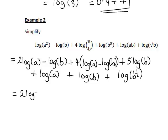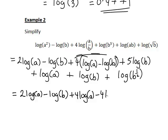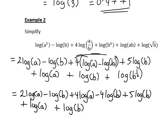So what have we got? 2 log a minus log b, that 4, we can multiply out those brackets now, so that'll become plus 4 log a minus 4 log b plus 5 log b, plus log a plus log b, and that log b to the half, again because that's b to the power of a half, that'll be the same as a half log b.